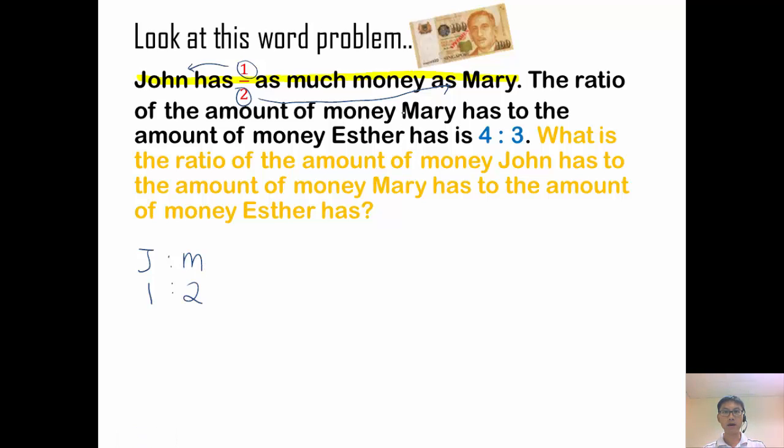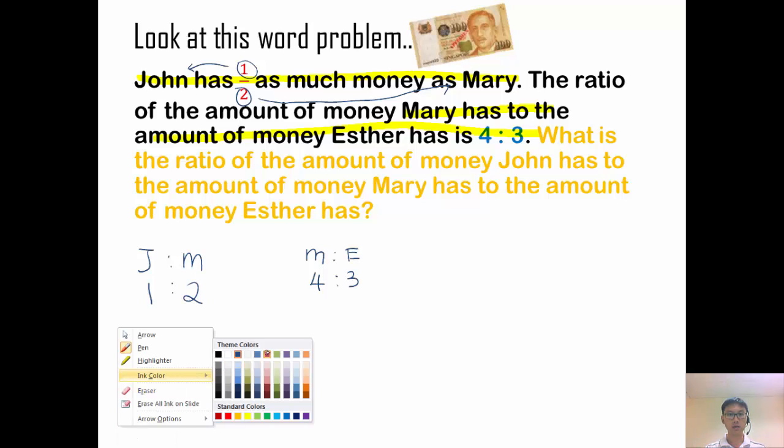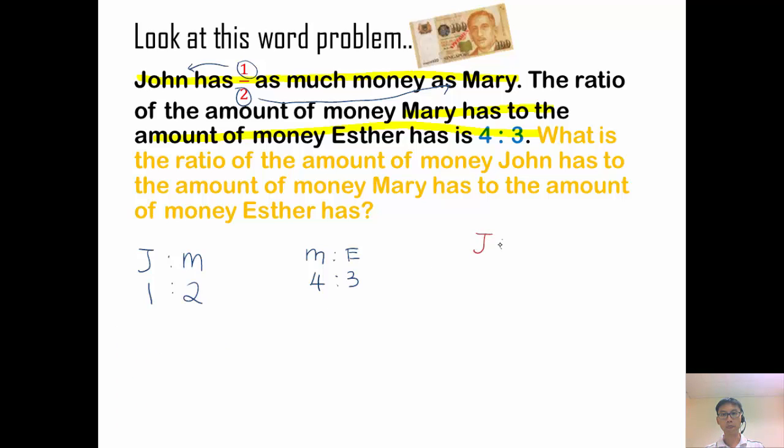Now then let's look at the second statement. So the ratio of the amount of money that Mary has to the amount of money that Esther has is 4 is to 3. So this time round, it's Mary is to Esther, 4 is to 3. Now my job, and the question is asking me for the ratio of John is to Mary is to Esther. So that's what the question is asking me. So what I want is for John is to Mary is to Esther.